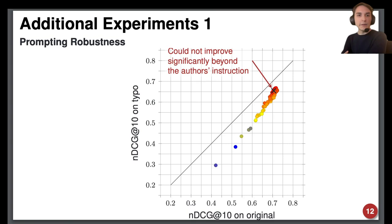We can see that none of the instructions we tested significantly improved beyond the author's prompt, and more effective prompts are more robust, but we could not find a significantly more robust prompt.